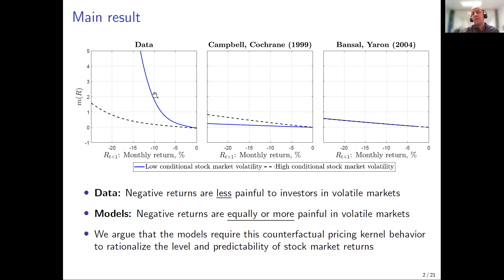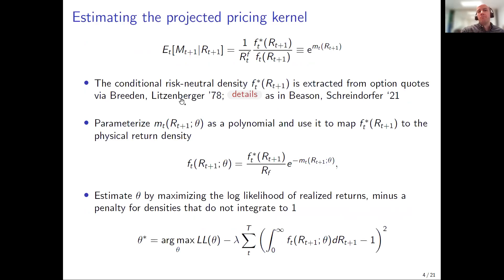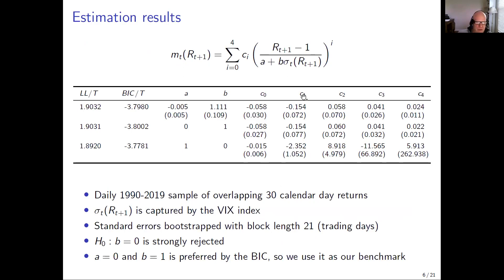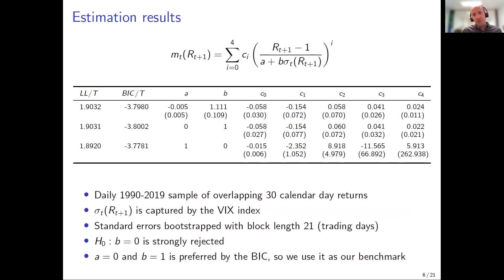A question about the polynomial order: how did we choose order four? We estimate for every polynomial order; four is preferred by the BIC — it provides the best fit essentially.